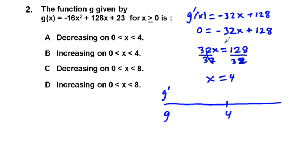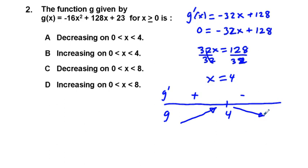We pick a number on either side of the critical number 4. Plugging in 0, we get positive 128, so the function is increasing from 0 to 4. Then picking a number bigger than 4, say 5, the function is decreasing. So we are increasing from 0 to 4 — that's answer choice B.